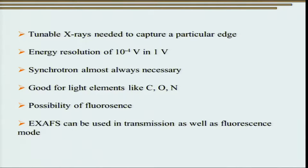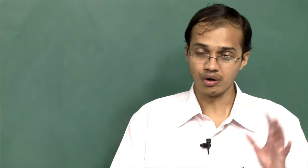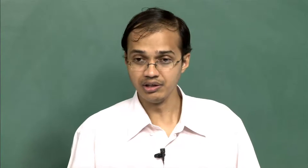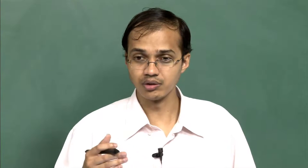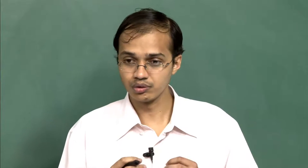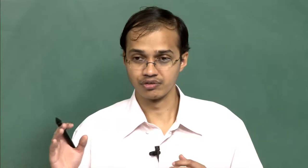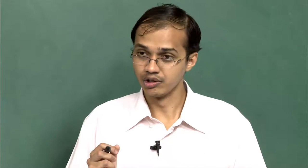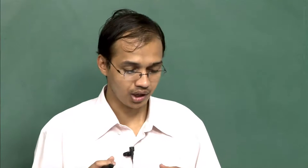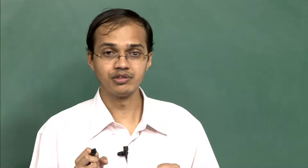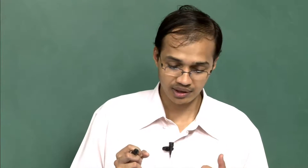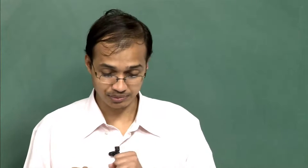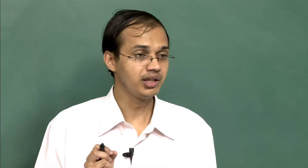The main driving force for carrying out XAFS is to study light elements like carbon, oxygen, and nitrogen, which cannot be very well studied using conventional spectroscopic techniques. Different kinds of signals can be used in XAFS: the free electron given out once a photon is absorbed, the fluorescent X-ray that comes off, and the Auger electron. All these signals can be used to get information about localized chemical composition. XAFS is generally used in both transmission and fluorescence modes.